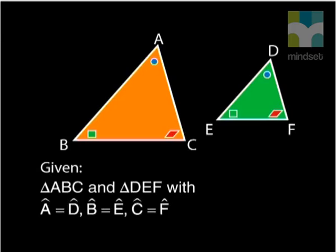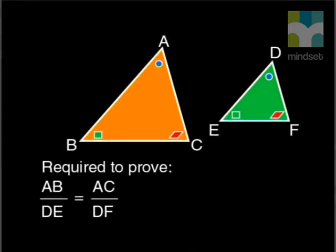What do we want to prove using this diagram? We must show that the triangles are in proportion. One way to do this is to show that the ratio of side AB to side DE is equal to the ratio of side AC to side DF.